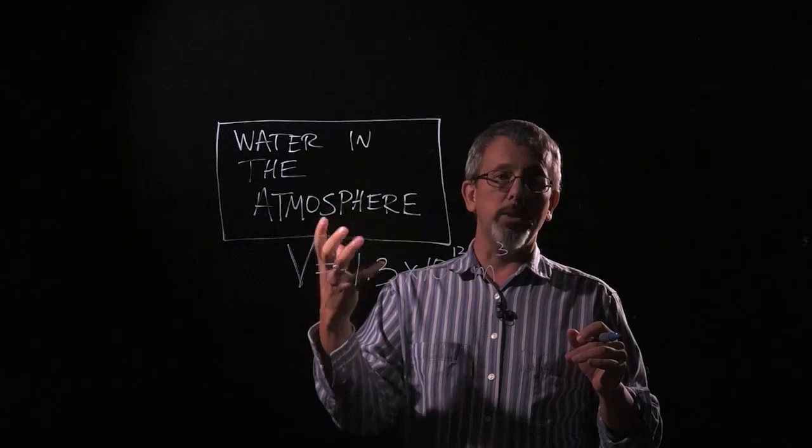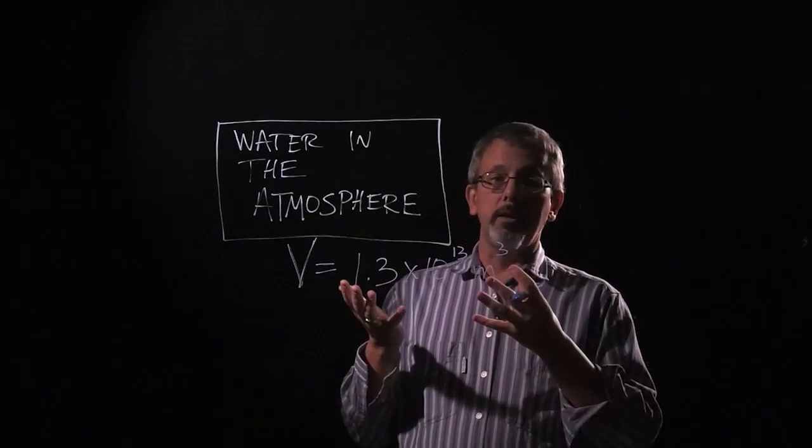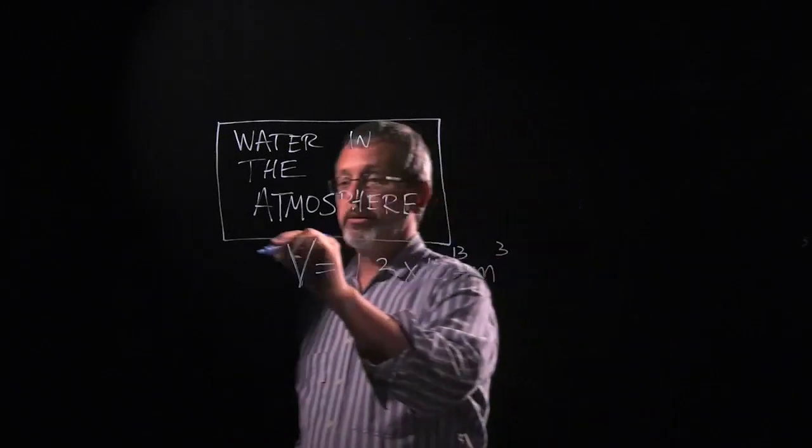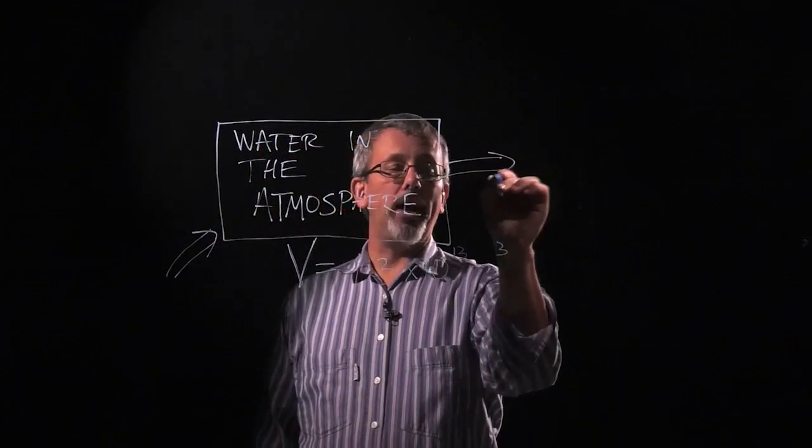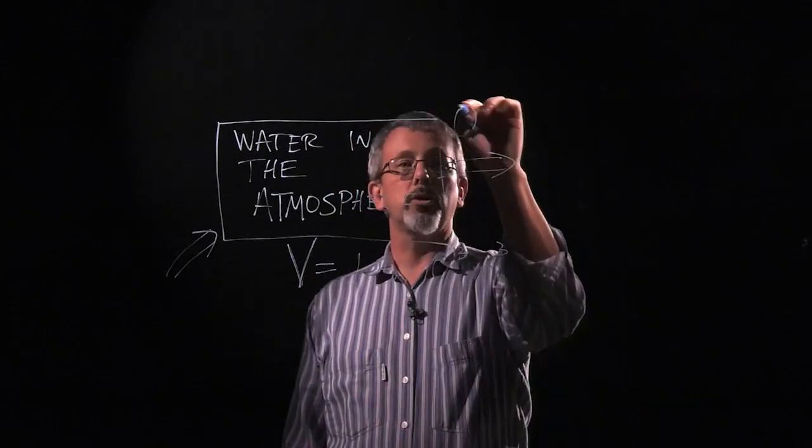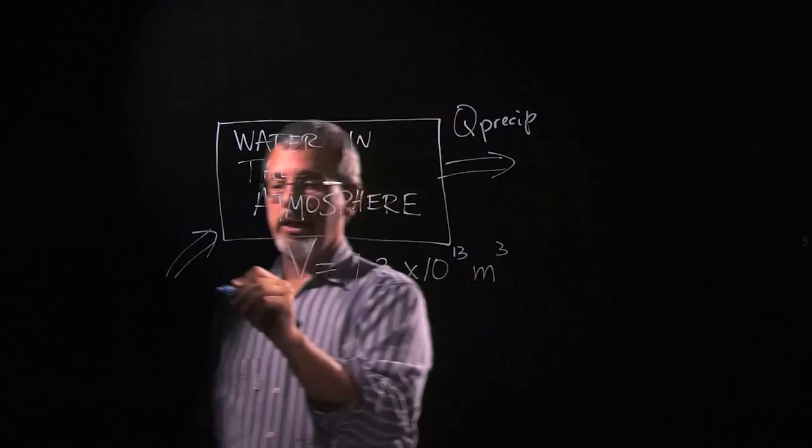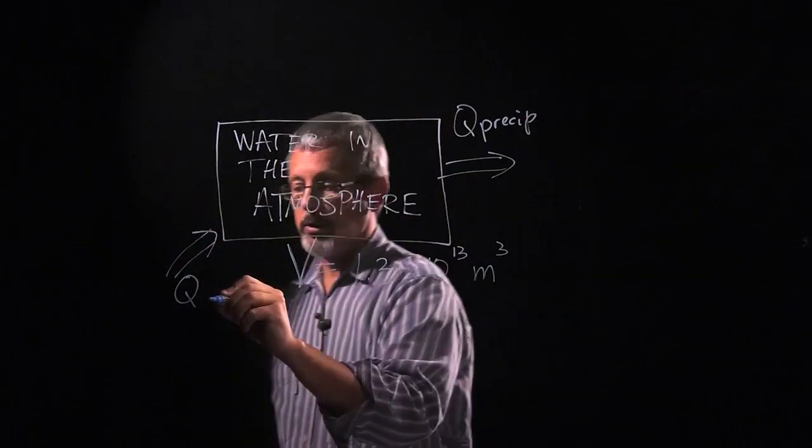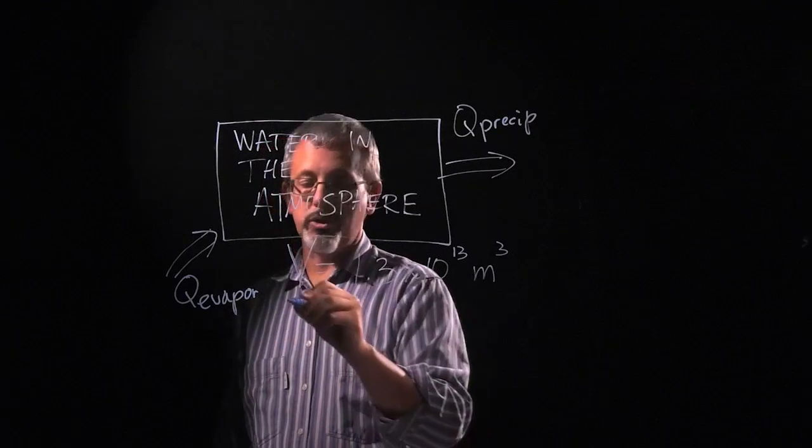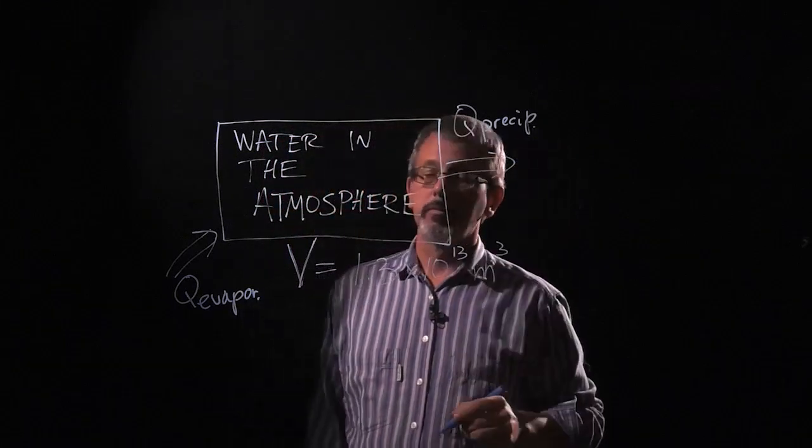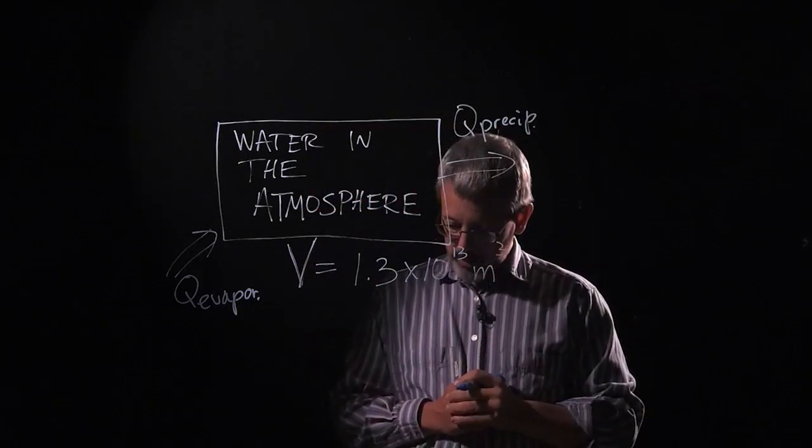The water that's there is always changing because at any one time you have some water being evaporated and added to the water in the atmosphere, and you have a flow out of precipitation. So here's our flow due to precipitation and here's our flow in due to evaporation and other similar sources. That's changing the water in the atmosphere on a regular basis.